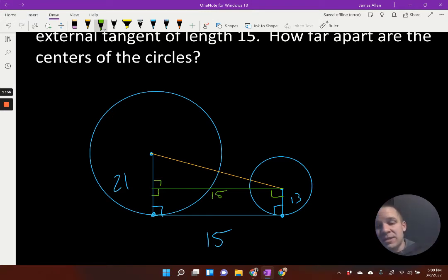well opposite the 13 it's also 13. I know this does not look to scale at all, but whatever. Now if the radius of the large circle is 21 and I've got 13 accounted for, that means that I've got eight left over here,